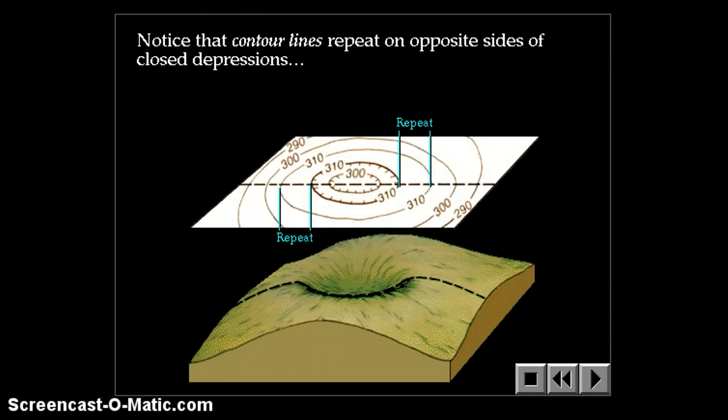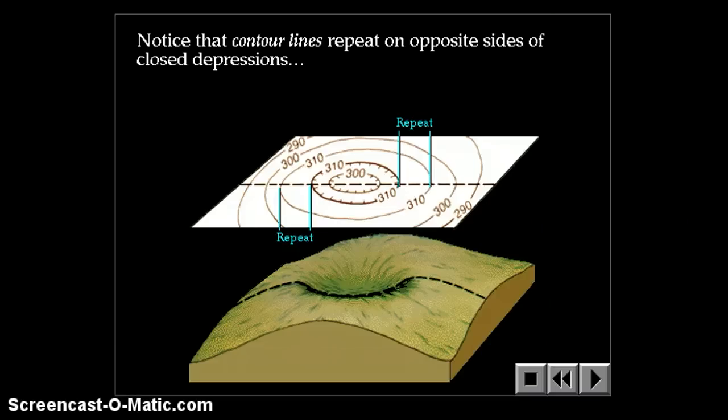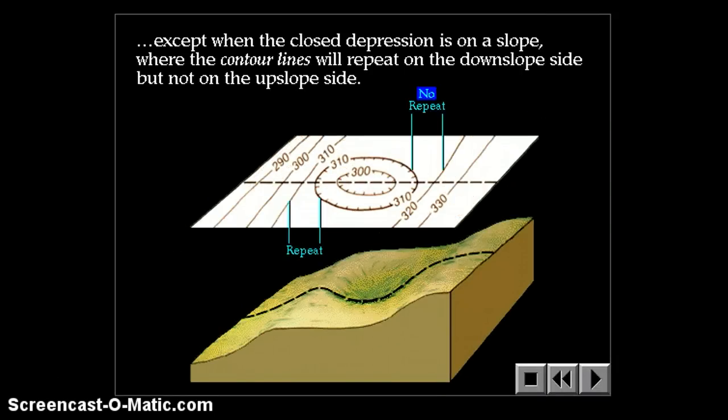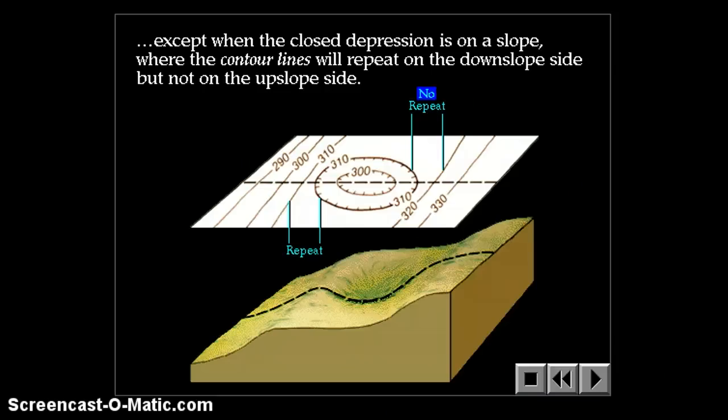When you have a closed depression, you're going to have repeating contour elevations. Unless you're on a slope. In which case, on the uphill side, upslope side, you do not have a repeat. And on the bottom, downhill side, you do have a repeat.